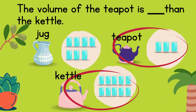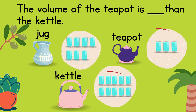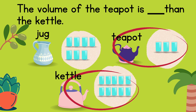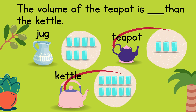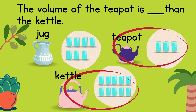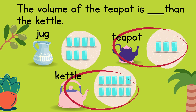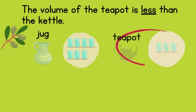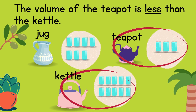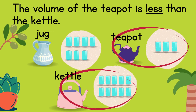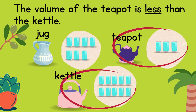Now, let's look at the teapot and the kettle. Let's read the question together. Can you tell the volume of the teapot is more or less than the kettle? The volume of the teapot is less than the kettle.